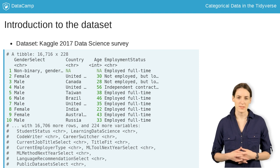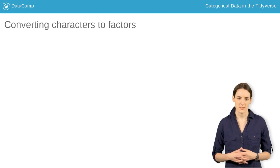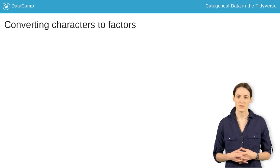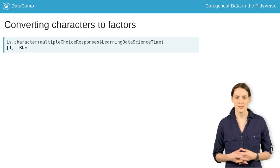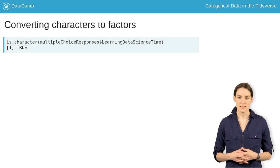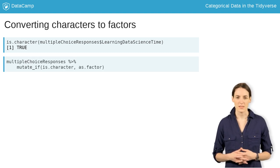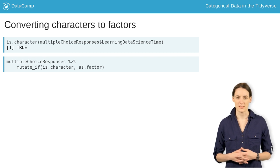How can we change this? First, we need to identify which columns are characters. We can use is.character for this. Next, we can use the function as.factor to change columns from characters to factors.